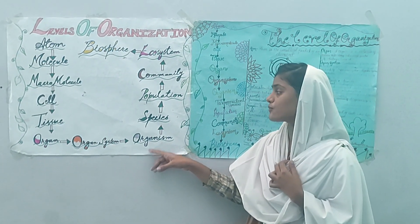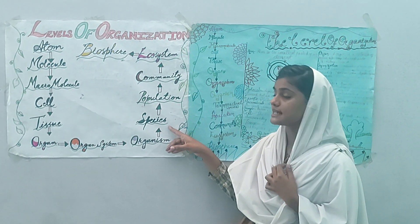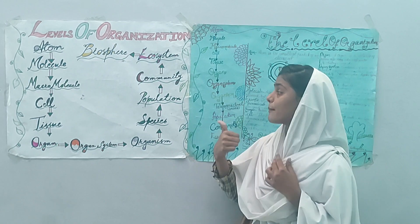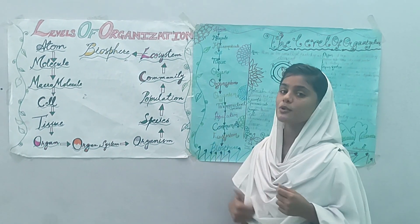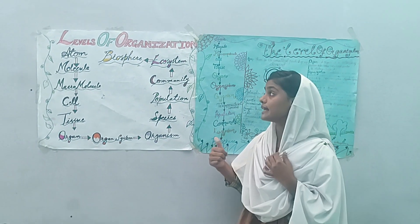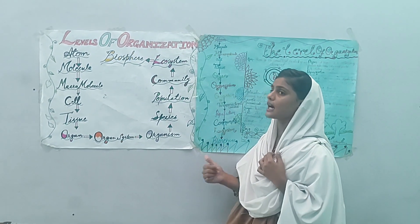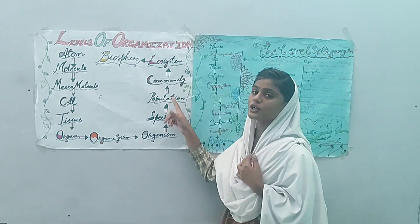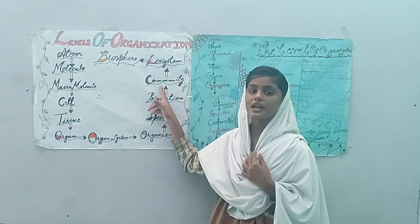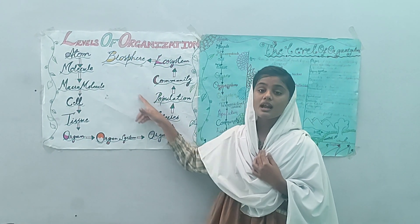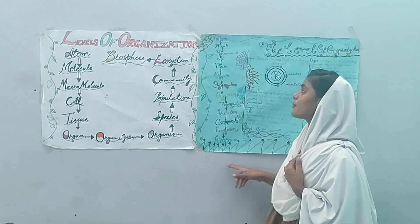Organ systems combine to form organisms, organisms combine to form species, species combine to form populations, populations combine to form communities, communities combine to form ecosystems, and ecosystems combine to form the biosphere. Now, let's come to the point.